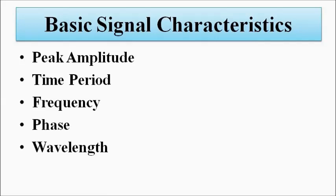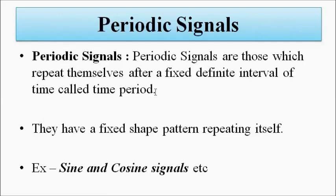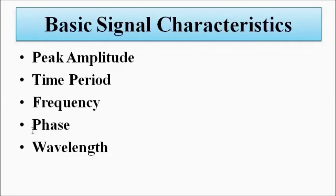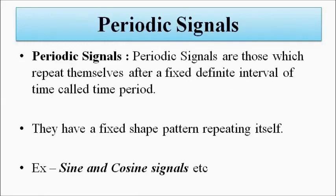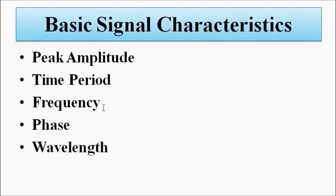Signals are of two types: periodic and non-periodic. We will discuss from the point of view of periodic signals. Periodic signals have a fixed pattern or shape which repeats itself after a fixed interval of time called the time period. The popular signals used for analysis and testing in electrical, electronics, instrumentation, or communication engineering are sinusoidal or cosinusoidal signals. There are other test signals as well — step, ramp, impulse — but for periodic signal analysis, sine and cosine signals are the popular choice.